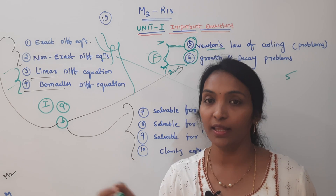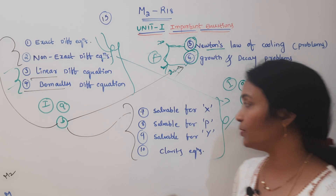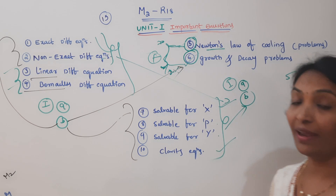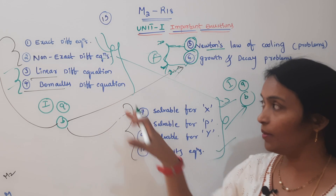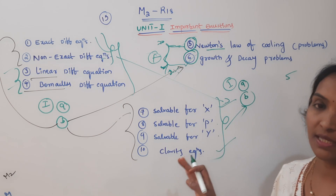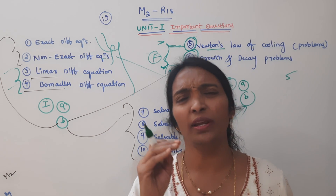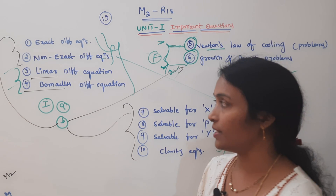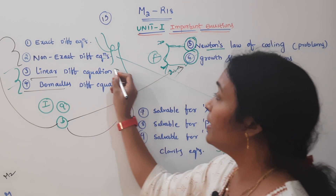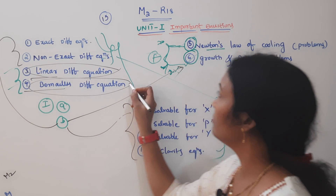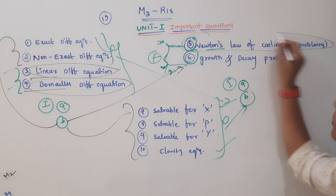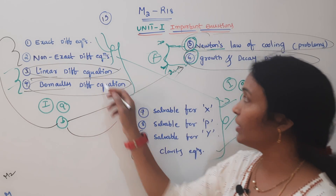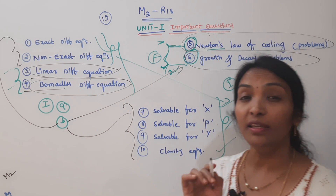If the only solution is wrong, you should check the process first. Next, solve for x, p, y. You should identify and solve. Prepare your first unit. Compulsory: linear differential equation, Bernoulli's equation, Newton's Law of Cooling, Growth and Decay. This is the average — below average. If you choose the average, at least score.